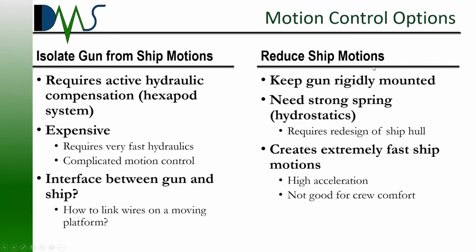Let's look at our next option: to instead reduce the ship motions. We'll keep the gun rigidly mounted to the ship and just make the entire ship move less. We're trying to reduce the angle of inclination, which means keeping our ship's roll and pitch at less than two degrees. That's going to require a very strong spring response, which means we're completely redesigning the ship's hull — building an entire ship just to support one piece of equipment. Creating that strong spring response also creates very fast ship motions and high acceleration, which is not good for crew comfort. It's no good to create a piece of equipment on a ship if the crew can't stand up long enough to operate it.